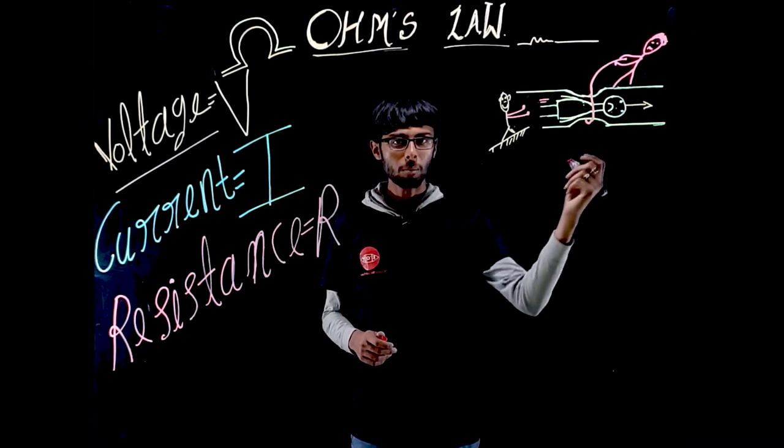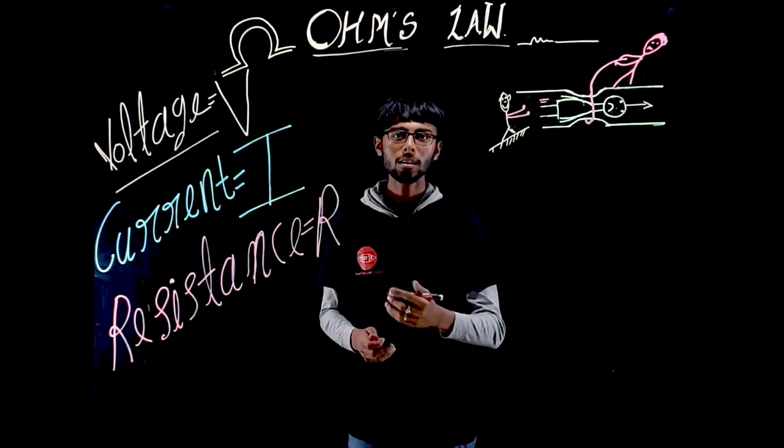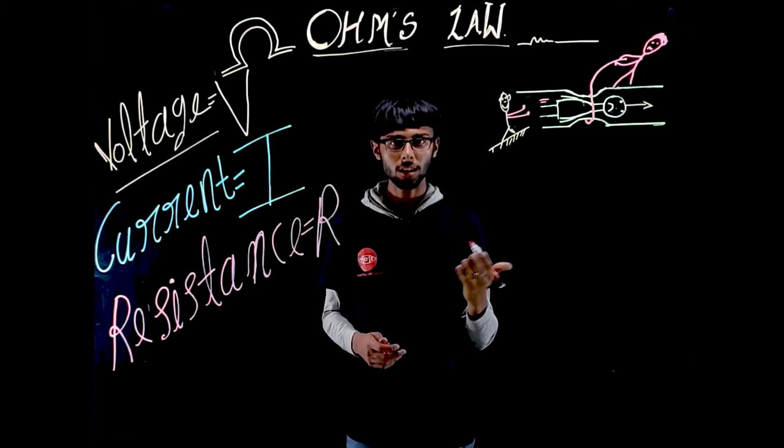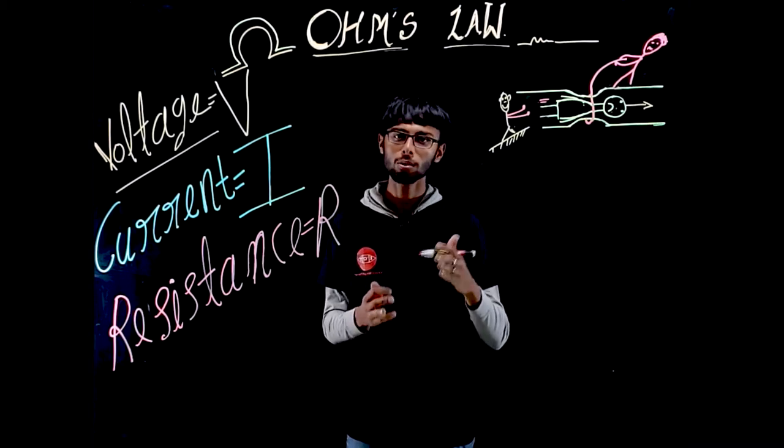Voltage is the potential difference applied across a conductor, current is the charge flowing in the conductor, and resistance is the opposition offered by that conductor to the current flowing.